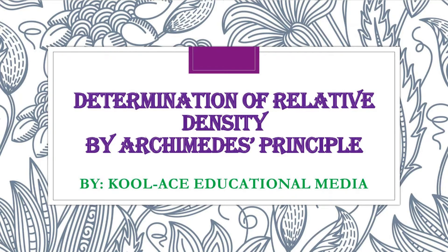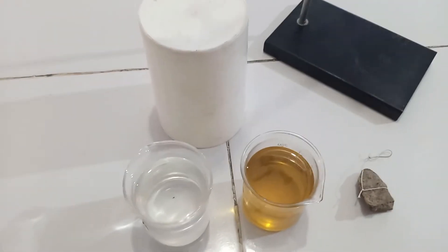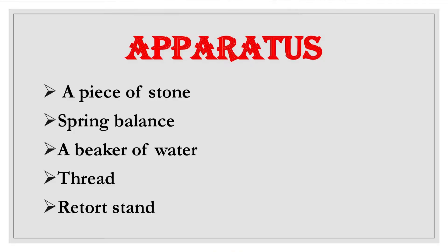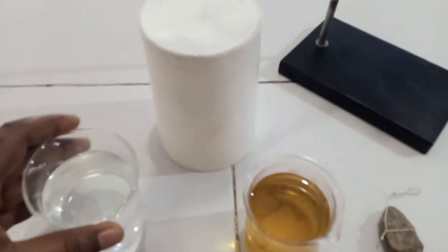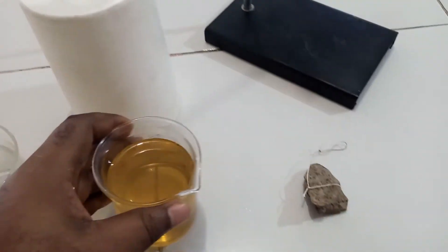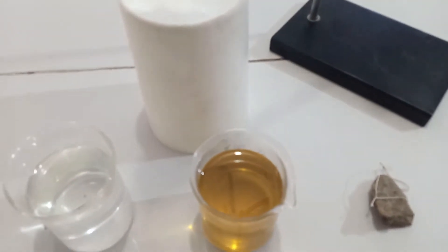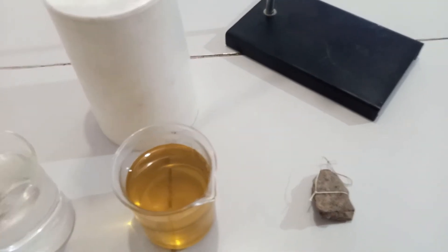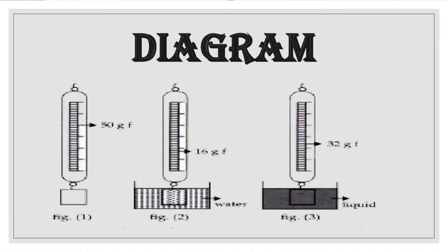Good day students, welcome back to our YouTube channel. In this class we are going to be determining the relative density of a liquid using Archimedes' principle. In this experiment we have the following apparatus: a spring balance mounted on a retort stand, liquid water, another liquid oil, and a stone or object of irregular shape. We are interested in finding the relative density of this particular oil.